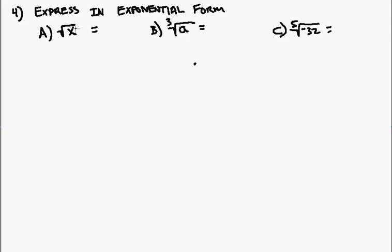Well, this turns into one. This is two, even though we don't see it. When we say the square root, we mean our index is two. This turns into x to the one-half power. Here, my exponent is one, my root is three. This becomes a to the one-third power.